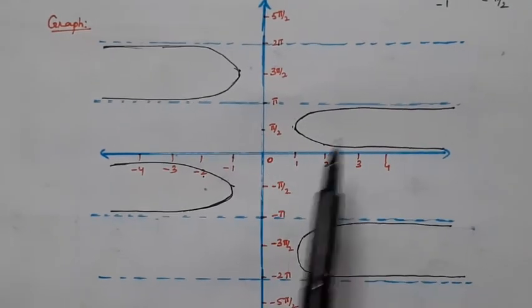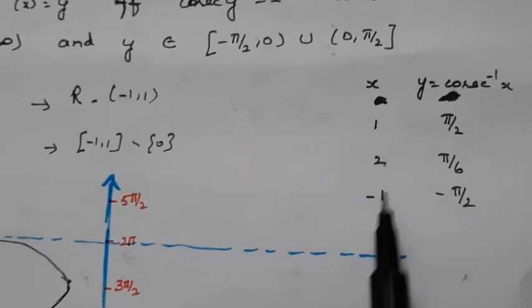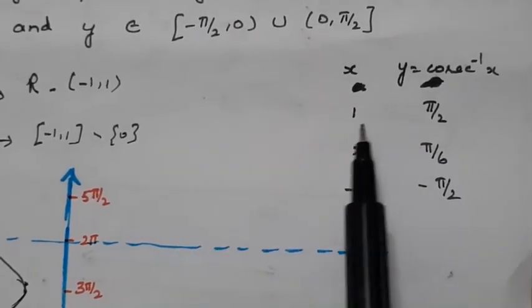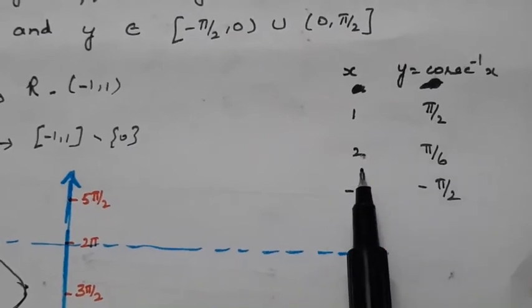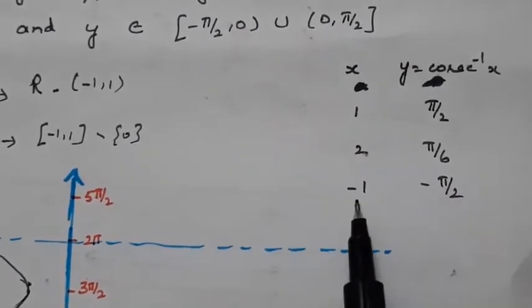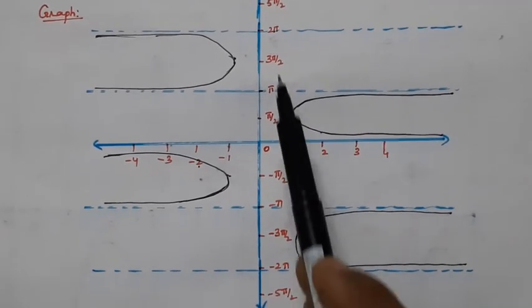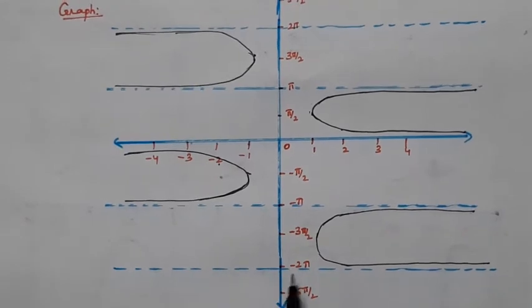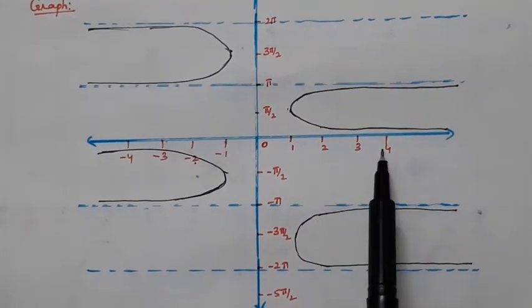Now let us see the graph of the inverse cosecant function. I have taken three integral values: 1, −1, and 2. For x = 1, cosecant⁻¹(1) = π/2. For x = 2, cosecant⁻¹(2) = π/6. For x = −1, cosecant⁻¹(−1) = −π/2. Along the x-axis, values range from 1 to infinity on the positive side and −1 to −infinity on the negative side. Lines drawn at y = 0, y = π, y = 2π, y = −π, etc. would be horizontal asymptotes to the inverse cosecant curve.